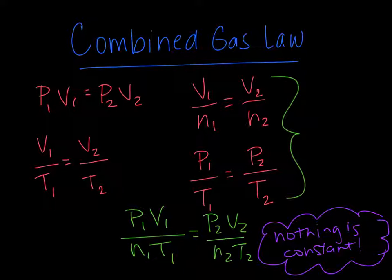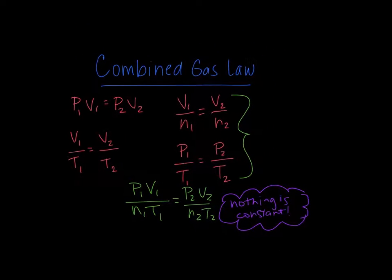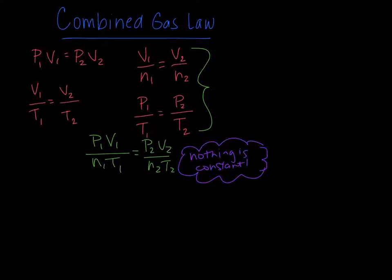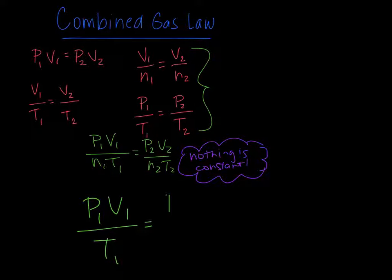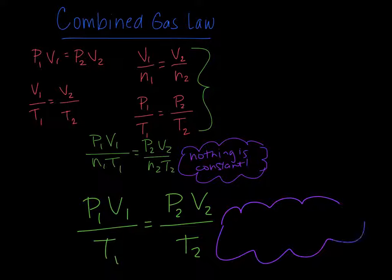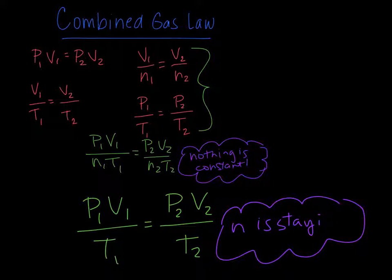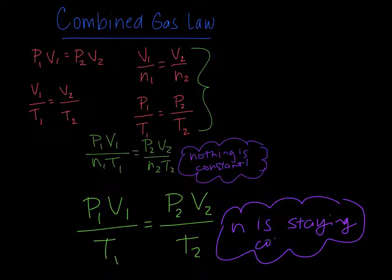If they were not all changing values — let's say that moles stays constant — then N would cancel out on both sides, and you would end up with P1 times V1 over T1 is equal to P2 times V2 over T2. This is more commonly used as the combined gas law, where moles are staying constant, so N isn't changing and it cancels out on both sides.